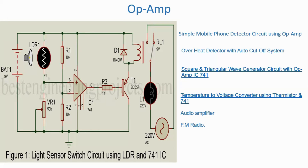In today's class we will do some practicals related to IC, that is Operational Amplifier IC. We will do two practicals in the same video. The first circuit is a light sensor switch circuit using LDR and 741 IC. 741 IC is an Operational Amplifier IC.